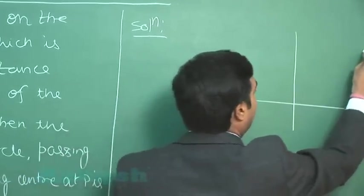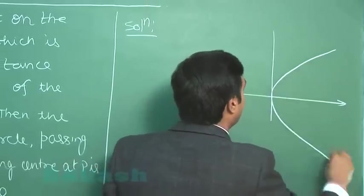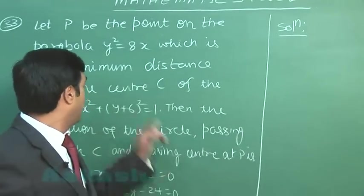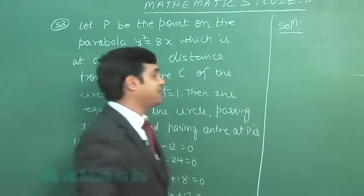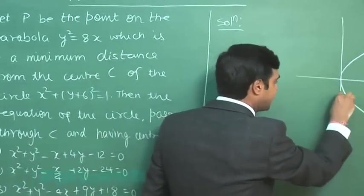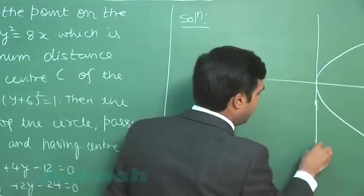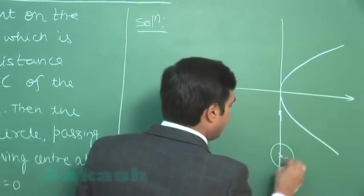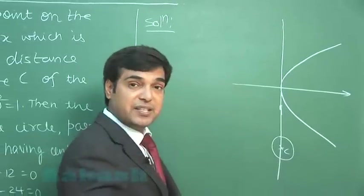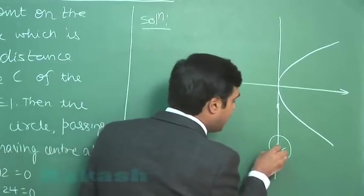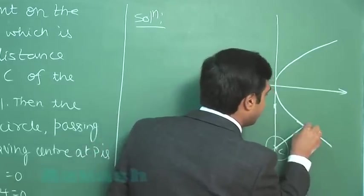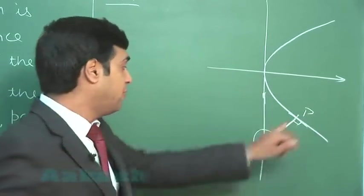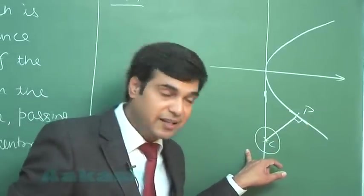A parabola is given, y squared equals 8x. Circle is given to me as x squared plus (y plus 6) whole squared equals 1. That is centered at (0, -6), say here, and radius is unity. So this is C. Now in question it is given there is a point P which is at the minimum distance. So clearly we can see the normal at point P will pass through the center. This point is clear.